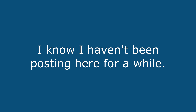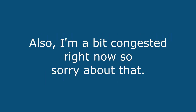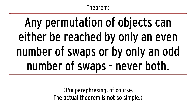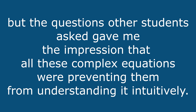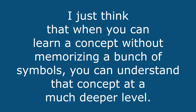I know I haven't been posting here for a while. I've been busy with college and my other YouTube channel, CarrieKH. I'm a bit congested right now, so sorry about that. But today in my group theory class, the instructor was talking about how any permutation of objects can either be reached by only an even number of swaps, or by only an odd number of swaps — never both. There were all these formulas on the board, and the questions other students asked gave me the impression that the complex equations were preventing them from understanding it intuitively. I just think that when you can learn a concept without memorizing a bunch of symbols, you can understand it at a much deeper level.